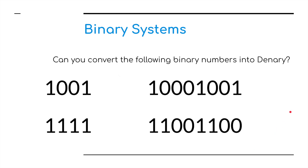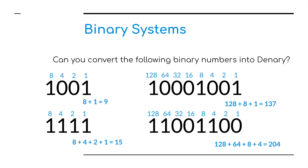Pause the video and have a go at converting the practice numbers. The first one: one lot of eight plus one lot of one is nine. The next: one lot of eight, one lot of four, one lot of two, one lot of one equals fifteen. Then: one lot of one hundred and twenty-eight plus one lot of eight plus one lot of one is one hundred and thirty-seven. And the final one: one lot of one hundred and twenty-eight, one lot of sixty-four, one lot of eight, and one lot of four equals two hundred and four. We're basically adding all the ones together, whichever place value they sit under.